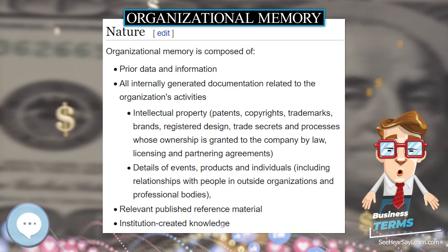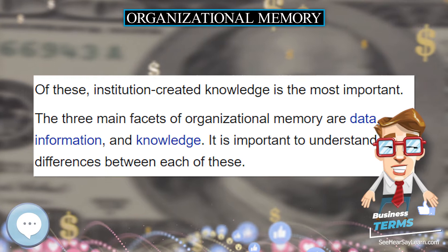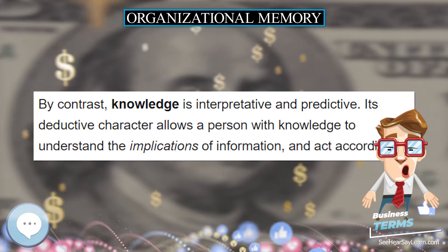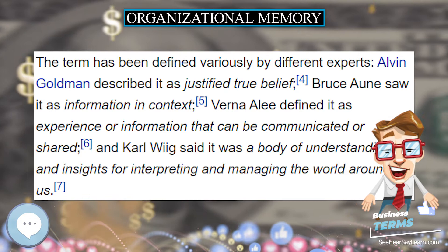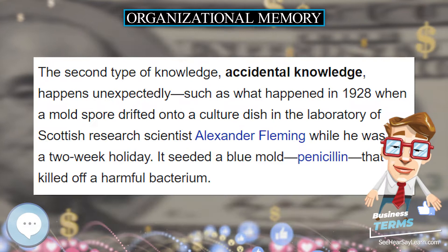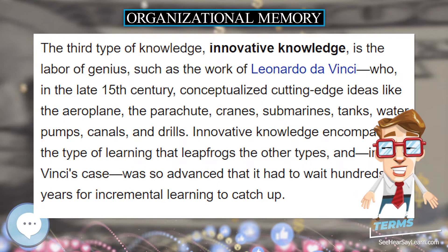The term has been defined variously by different experts: Alvin Goldman described it as justified true belief; Bruce Ohne saw it as information in context; Werner Lee defined it as experience or information that can be communicated or shared; and Carl Wig said it was a body of understanding and insights for interpreting and managing the world around us. The word knowledge comes from the Saxon word knorlek. The suffix lek has become, in modern English, like. So knowledge means knor-like, with knor meaning emerge. Its best interpretation is that it is an emergent phenomenon, an extension of existing erudition.